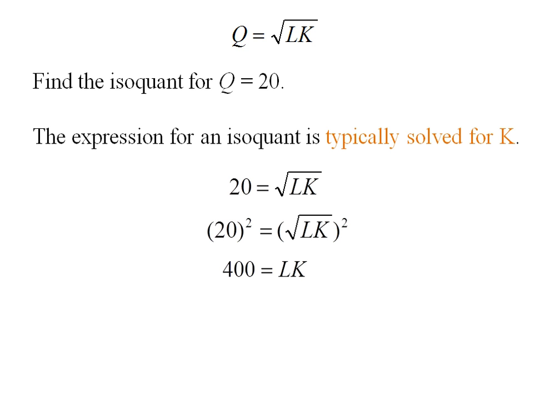Well, if I'm solving for K, I need to divide both sides by L, and this is the expression for the isoquant when quantity equals 20.